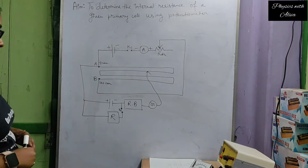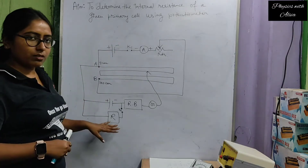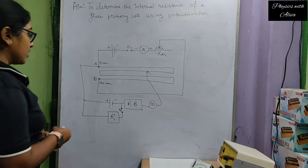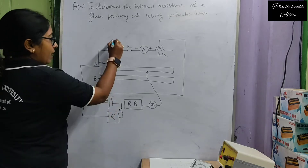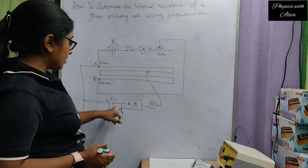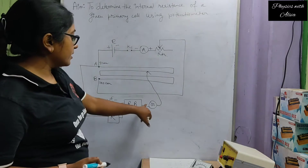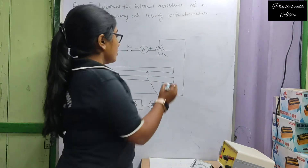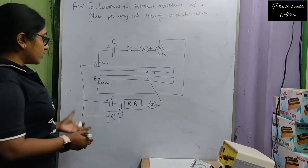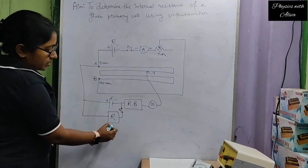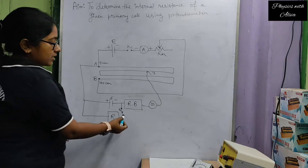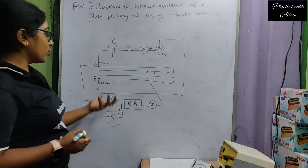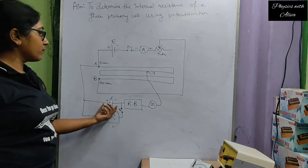There is another part of the circuit. From point A, we connect another battery. With this battery, a resistance box is connected, and then a galvanometer is connected to the resistance box. With the galvanometer, a jockey is connected. In parallel with the battery, a capital R resistance and a key K2 are connected. We have to determine the internal resistance of this small battery.